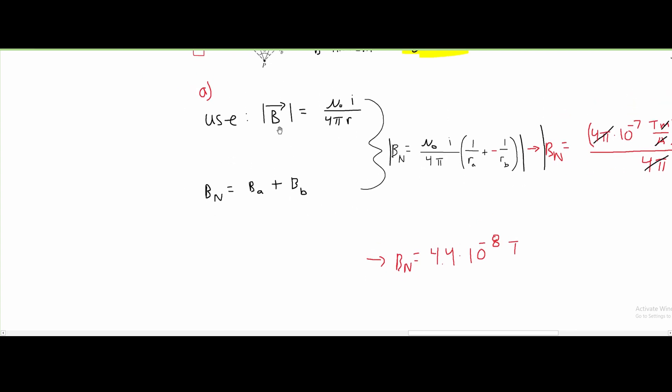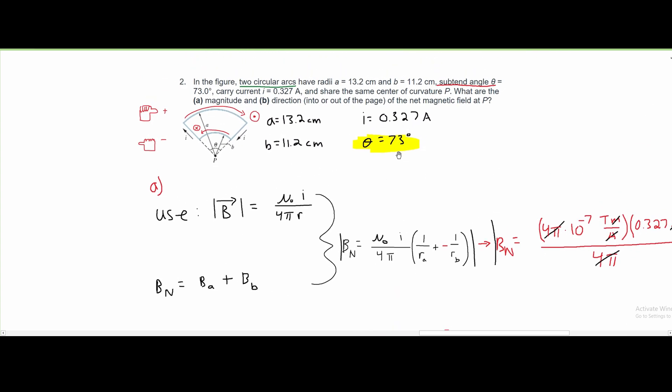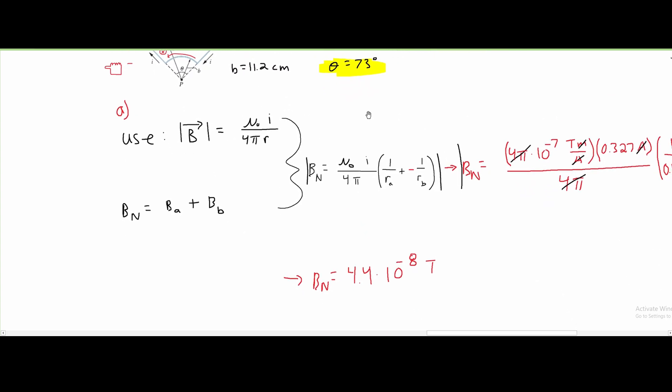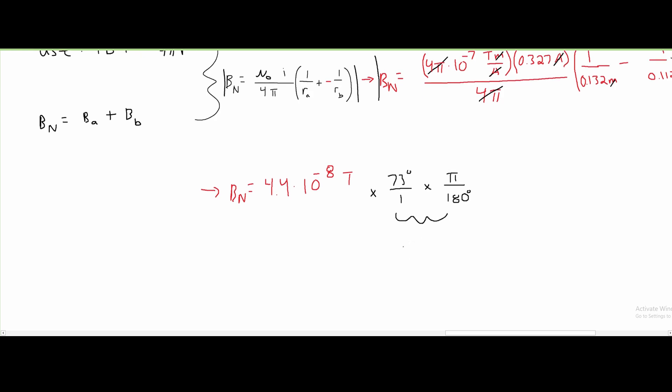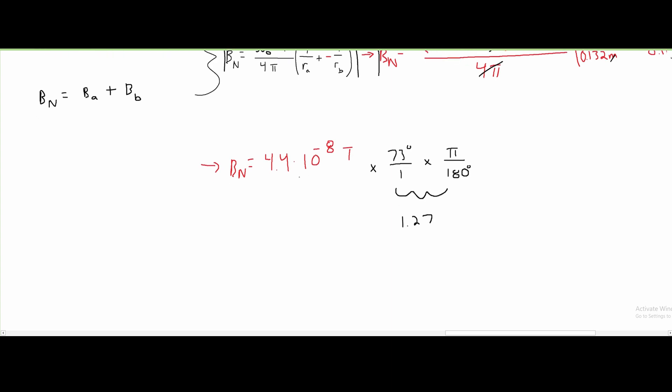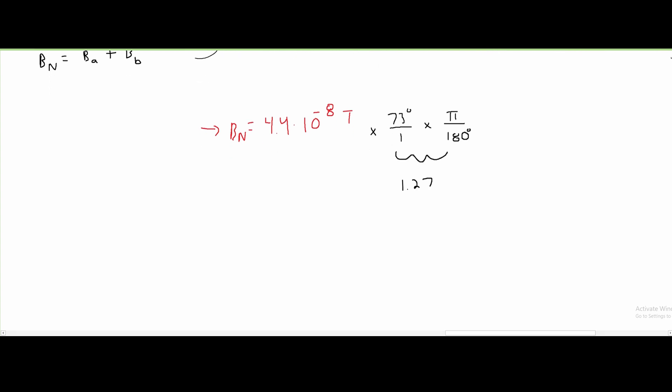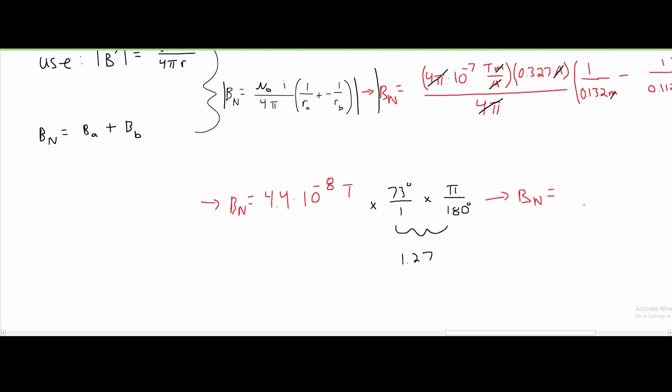Normally we would be done here, however, since we are given an angle, we have to factor that in and multiply by that angle. We aren't given a cosine or sine, so we have to convert this into radians. The conversion is π over 180 degrees. This is 1.27, and if we multiply that by our 4.4 times 10^-8, we get that our B_N is approximately 5.6 times 10^-8 Teslas.